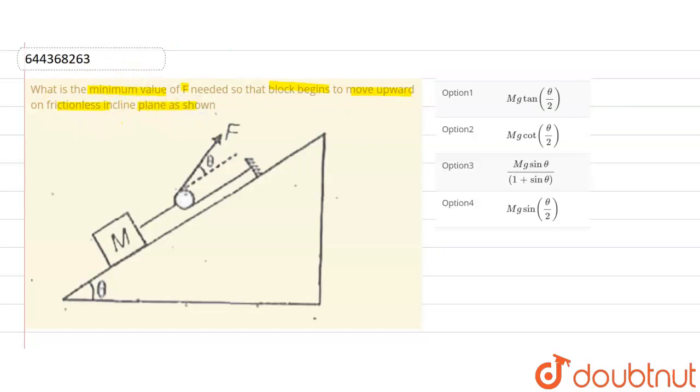So students, in this let me explain you that this is a pulley, and this is attached here with a fixed end. Here it is a block of mass m attached, so we are applying a force at theta degrees.